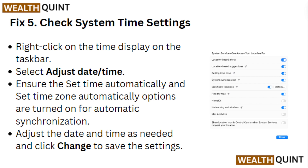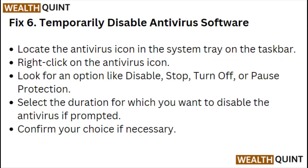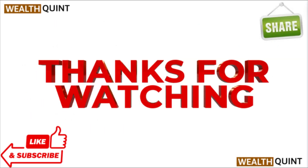Adjust the date and time as needed and click Change to save the settings. Fix 6: Temporarily disable antivirus software. Locate the antivirus icon in the system tray on the taskbar, right-click on the antivirus icon, and look for an option like Disable, Stop, Turn Off, or Pause Protection. Select the duration for which you want to disable the antivirus, and if prompted, confirm your choice. Thanks for watching — please like, share, and subscribe to our channel.